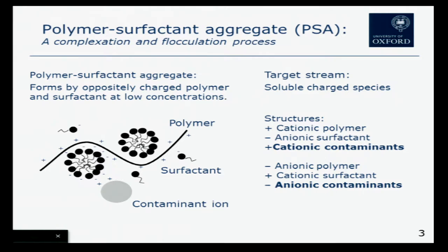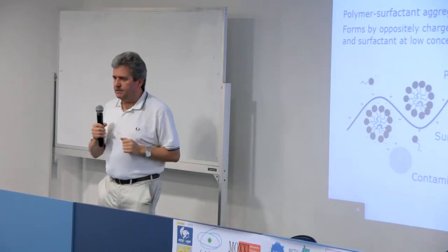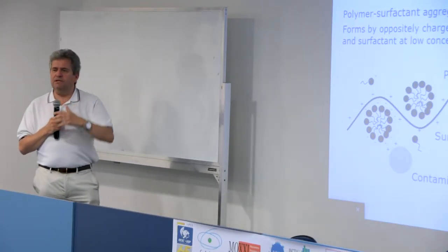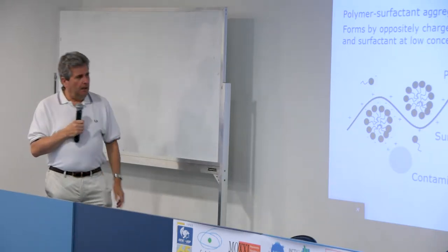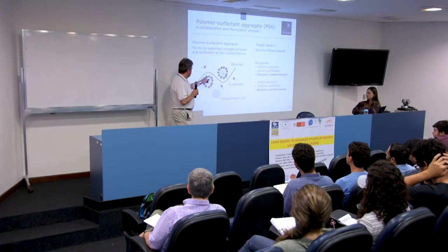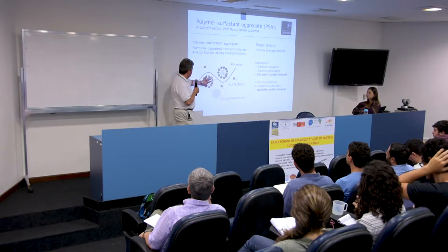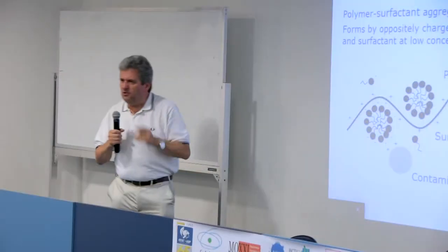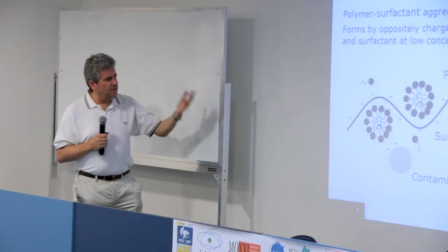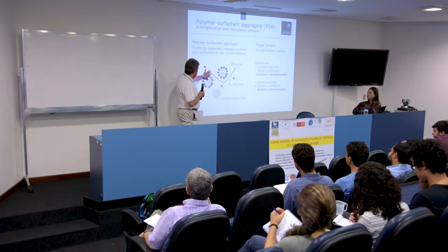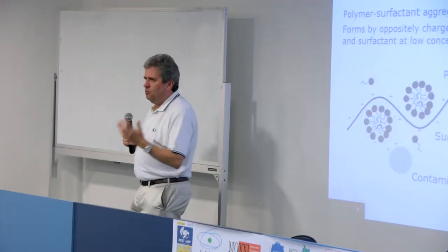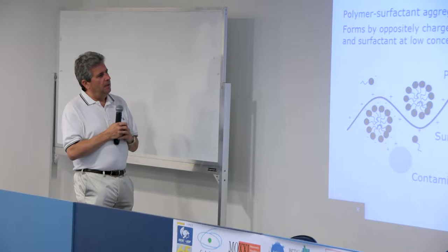The polymer surfactant aggregate forms from an oppositely charged polymer chain and a surfactant at low concentration. This is an important point: micelles form at quite high concentrations — they must reach a critical micelle concentration. But if you have a polymer, you can form these miniature micelles at much lower concentrations, maybe orders of magnitude lower. That means we can make this happen with relatively dilute concentrations of surfactant and polymer, which is good because we don't want to contaminate the water too much.